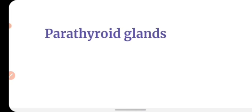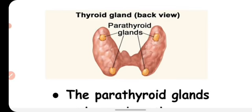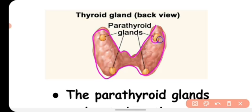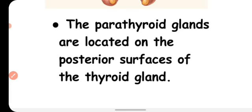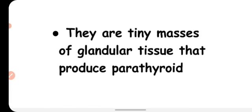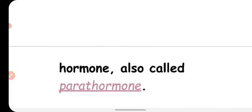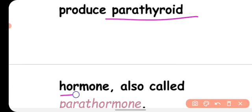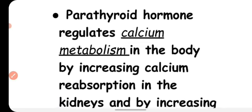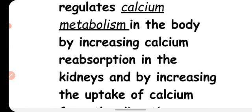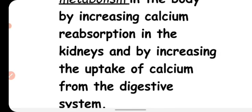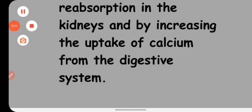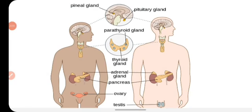The next endocrine gland is the parathyroid gland. These are located on the posterior surface of the thyroid gland as four tiny masses of glandular tissue. They produce Parathyroid Hormone (PTH), also called parathormone, which regulates calcium metabolism by increasing calcium reabsorption in the kidneys and increasing calcium uptake from the digestive system.